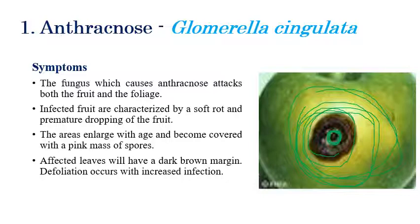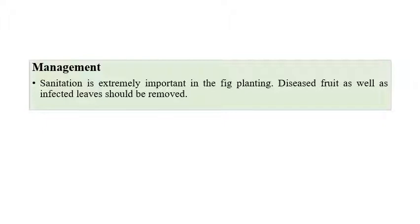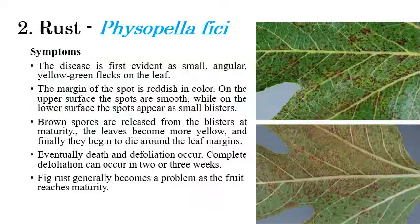The name itself — anthracnose — indicates black color spots that can cover the fruits. We have already seen anthracnose in banana and also in mango, where the same type of black color discolorations or black color covering can be seen on fruits. Coming to the management aspects, sanitation is extremely important in fig planting, and infected plants or infected plant parts should be removed.